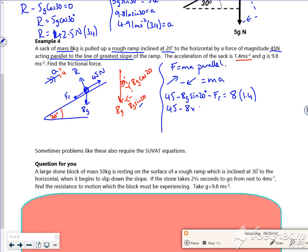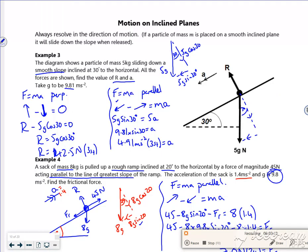So if I do a slight rearrange, I've got 45 minus 8 times 9.8 times sine 20 minus 8 times 1.4, and that's equal to my friction. The completed pack says that's 6.99, but because we've got 9.8, I'm going to do 2 sig fig as an answer, so 7.0 to 2 sig figs is my friction.